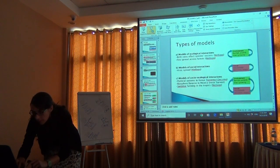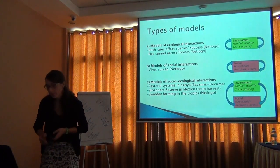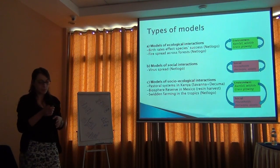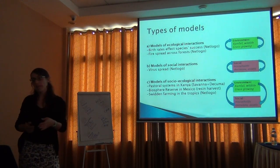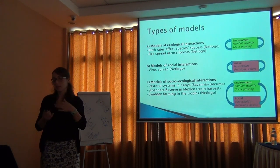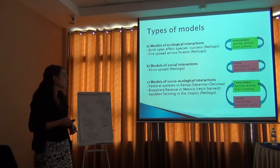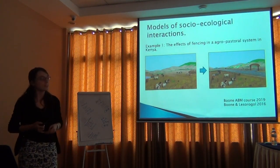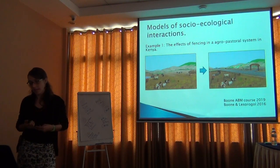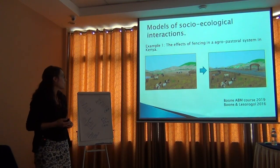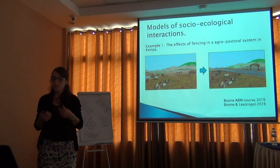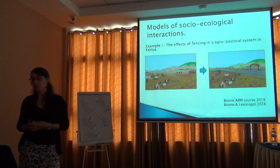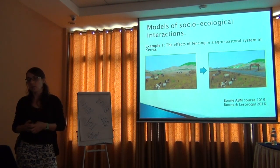I'm going to show you three models that focus on the combination of the ecological part and the social part. The first one is about agro-pastoral systems in Kenya. As you may know, there's been a change in agro-pastoral systems in the drylands of Africa, not just in Kenya.